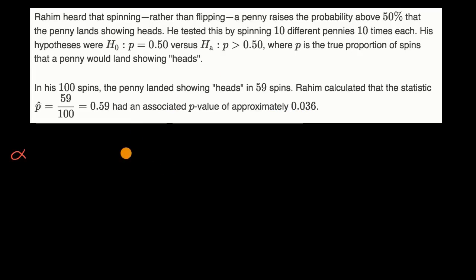So, based on this scenario, if ahead of time, Rahim had set his significance level at 0.05, what conclusions would he now make? And while you're pausing it, think about how that may or may not have been different if he set his significance levels ahead of time at 0.01. Pause the video and try to figure that out.